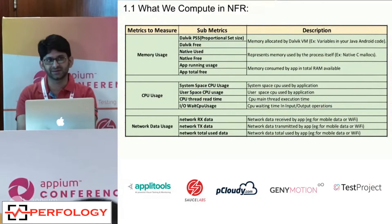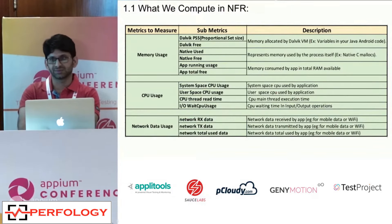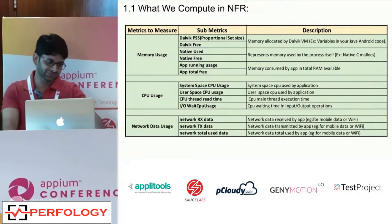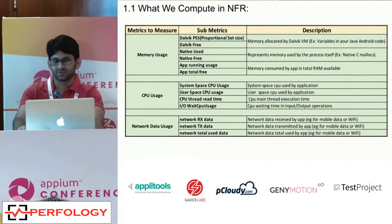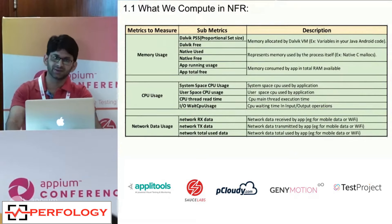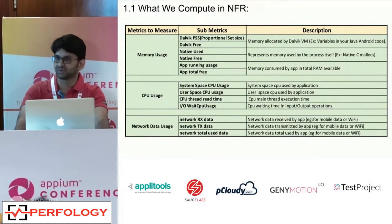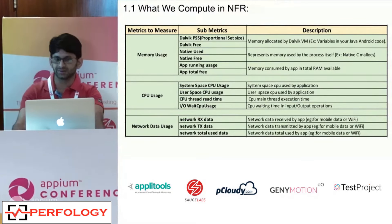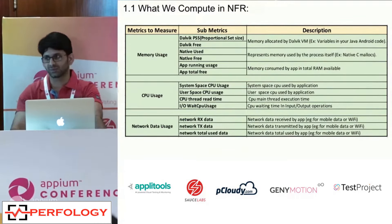Android memory is further segregated into two subcategories: Dalvik memory, which is heap memory allocated by Java objects, and native memory, used by the operating system for system services like C or C++ libraries. The Android OS has no check on the native memory side — it can use as much as is available — but there is a check on the Dalvik side. For every device, an application cannot use greater than a defined amount of Dalvik heap memory, and exceeding that causes out-of-memory issues.